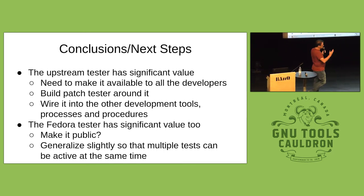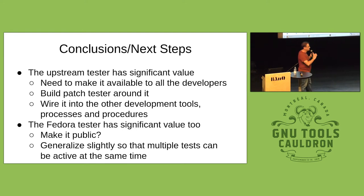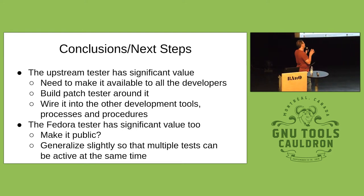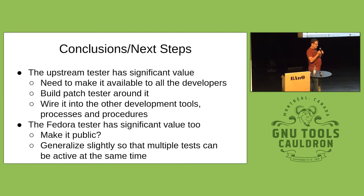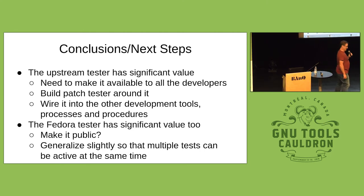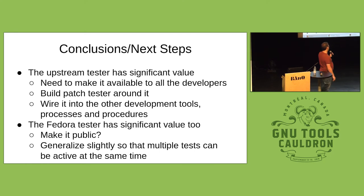To summarize: the upstream tester — I really like what it's done and I think we want to make it public as soon as possible. The Fedora tester has significant value as well. Do we want to make it public? I don't know — not because I want to keep it private, but it sucks up far more resources than the upstream tester. It'll consume as much resources as you can give it.